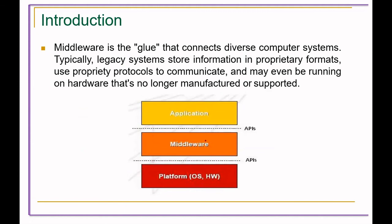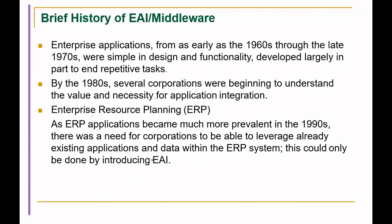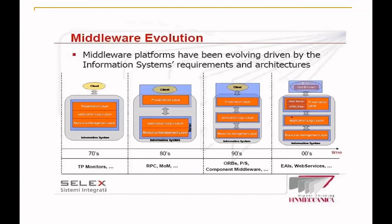Middleware platforms have been evolving, driven by information systems requirements and architectures. From the 1970s through the 1980s, 1990s, and into the 2000s, significant development has occurred. A key requirement is that middleware must support any type of platform — whether Unix, Windows 7, or Windows 10 — and we have actually already started using middleware technologies without realizing it.